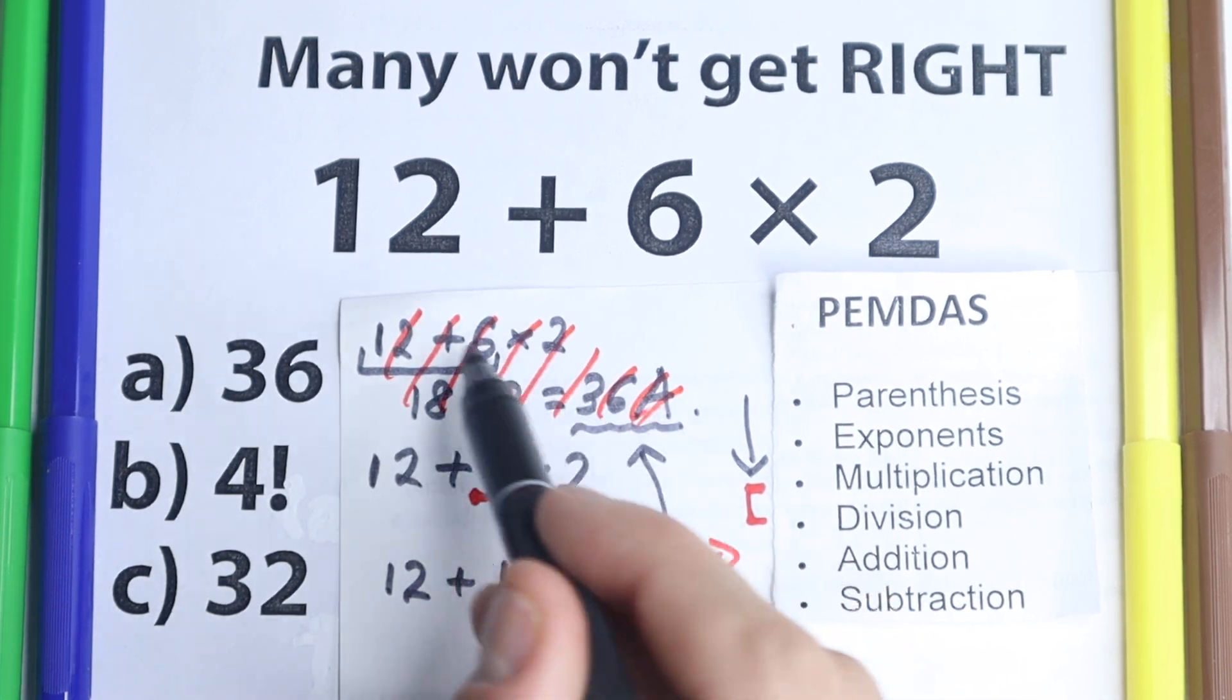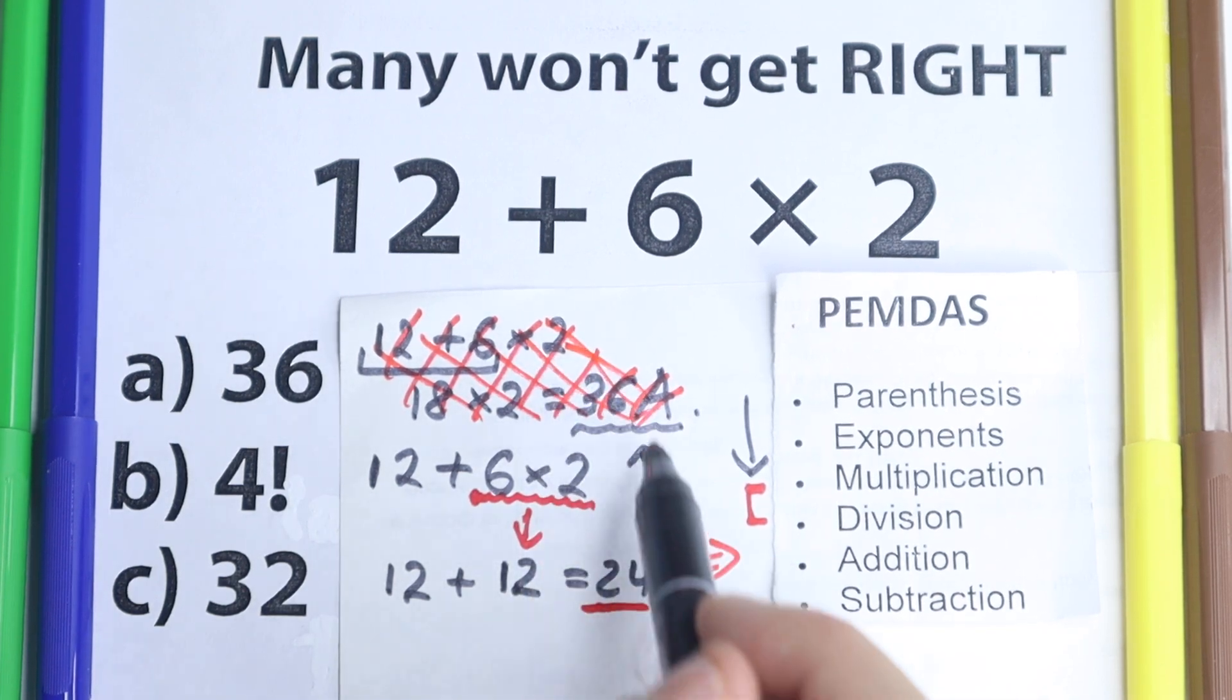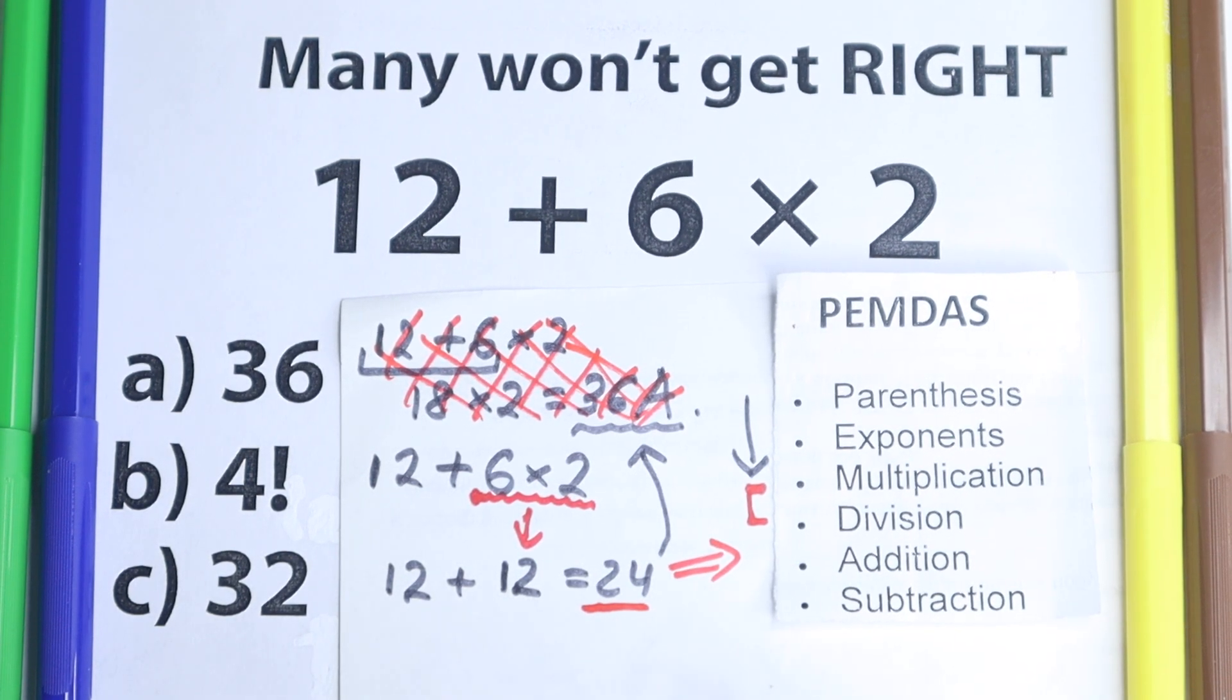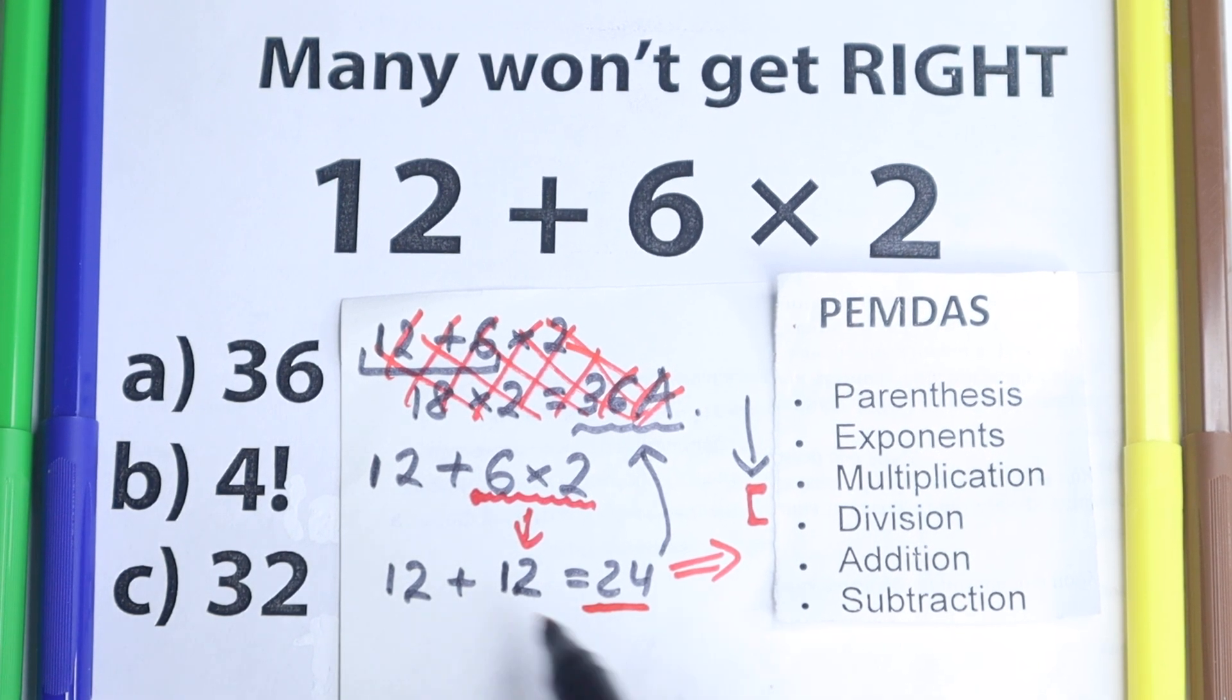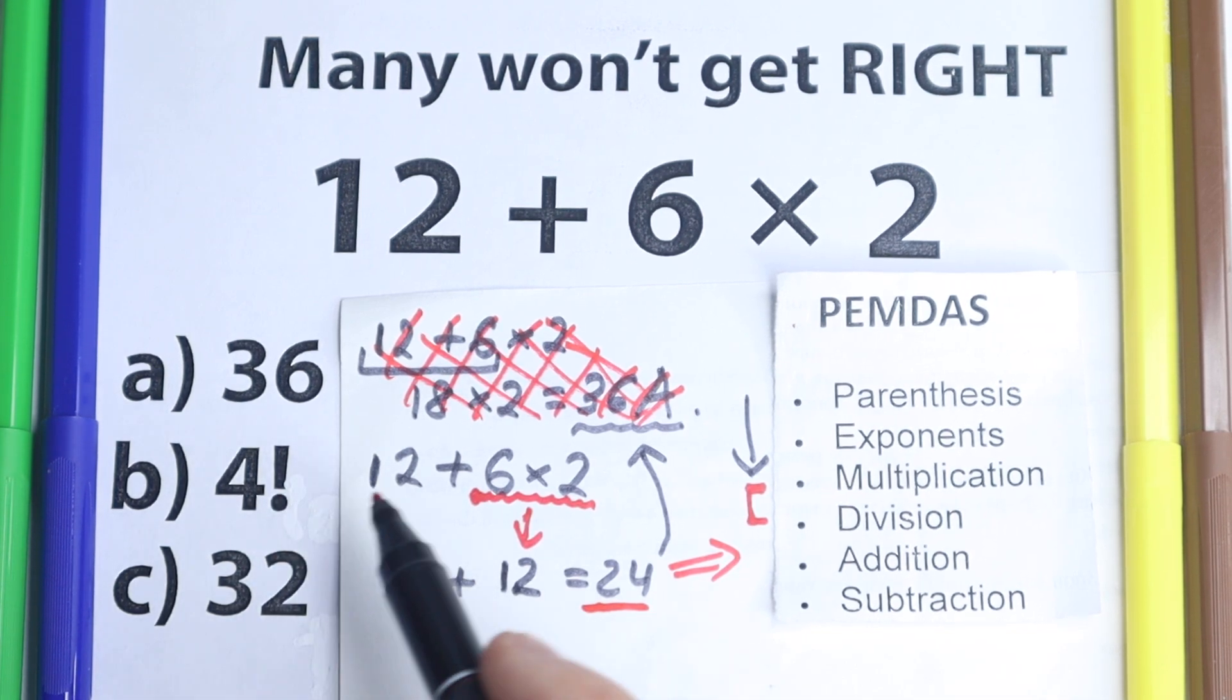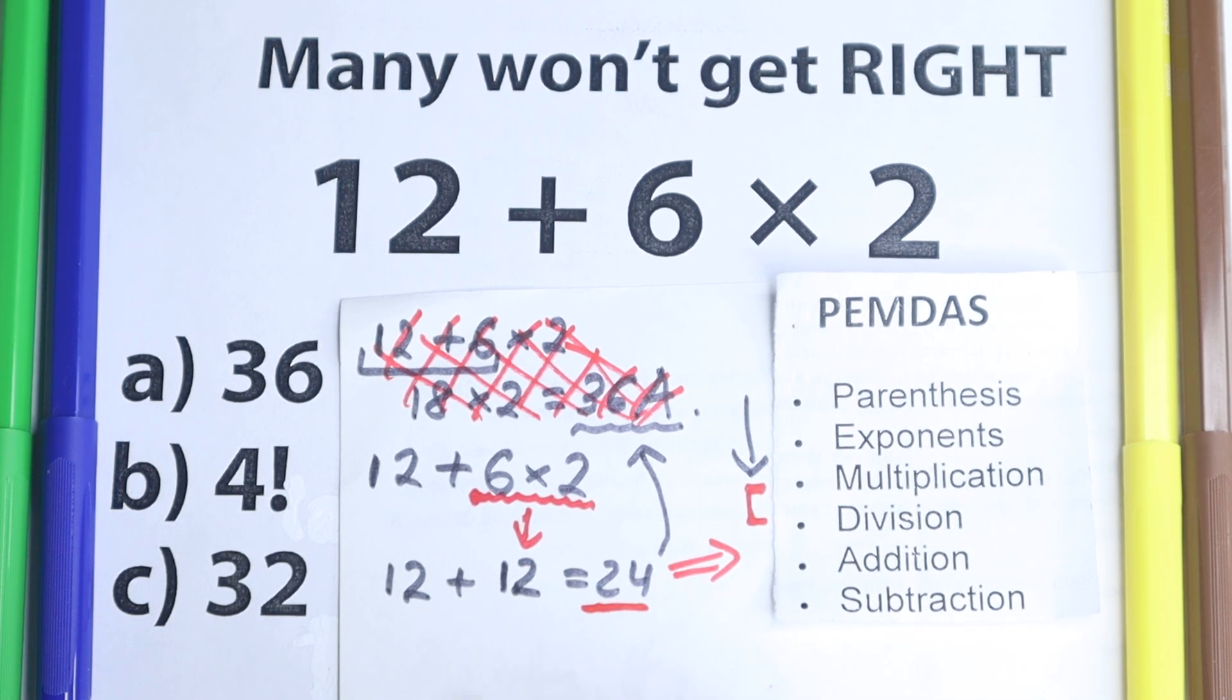So I just wanted to cancel this solution. This is a very bad solution. Just forget this solution. This is very bad. So 36, absolutely wrong solution. Correct answer is 24. This is not C, this is not option A. What about this 4 factorial? Because we need to choose one option.